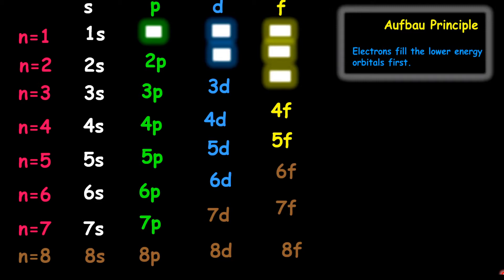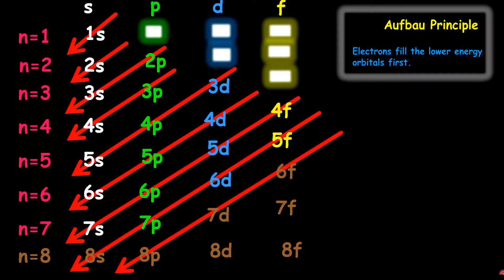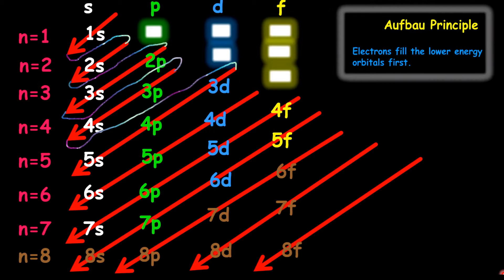To fill the energy orbitals, what you need to think about is the diagonals — we fill them using diagonal arrows, going from arrowhead to tail. We start filling from 1S, then 2S, then 2P into 3S, then 3P. After 4S, you go to 3D, down to 4P, then 5S. After 5S, you go all the way up to 4D, then 5P, and then 6S.